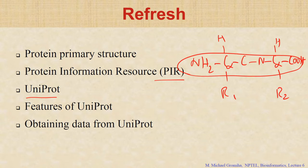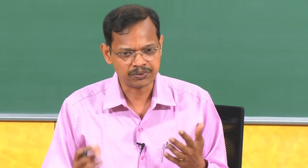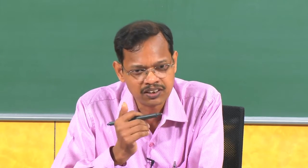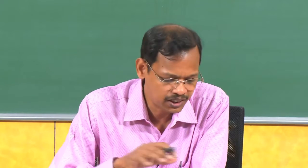To obtain data from UniProt — for example, for transcription factors — go to UniProt and use the search option for transcription factors to get a list of sequences. To remove redundancy, UniProt offers options at 50%, 90%, and 100% identity. For a specific protein like hemoglobin, you can get the sequence, function, post-translational modification sites, binding sites, and all related information from UniProt.